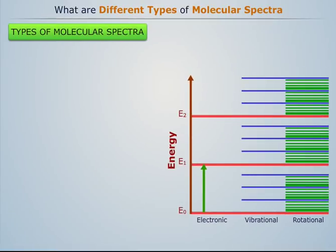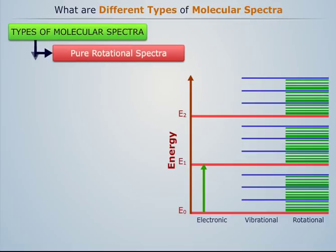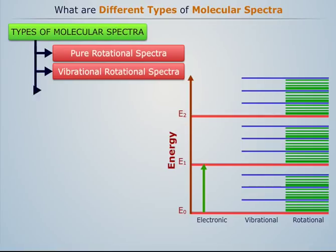There are three main types of molecular spectra: pure rotational spectra, vibrational-rotational spectra, and electronic band spectra.